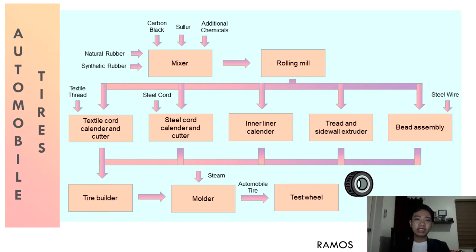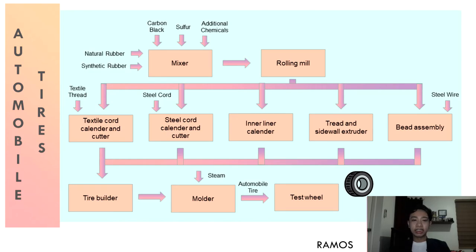After assembly, the tire still needs to undergo curing or vulcanization. The tire is sent into a molder and filled with hot steam at a temperature of about 280 degrees Celsius. Afterwards, the tire is cooled and sent to a test wheel where it is inflated and spun. The test wheel measures the balance of the tire and whether it runs in a straight line. In modern days, a tire is rarely rejected.